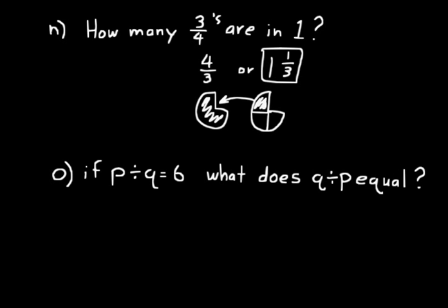Problem O: if P divided by Q equals six, what does Q divided by P equal? P divided by Q is like the fraction P over Q, and if that equals six, that's six over one. So Q over P equals one over six — the reciprocal. Remember: any number can be written as a fraction over one, and a number times its reciprocal always equals one.